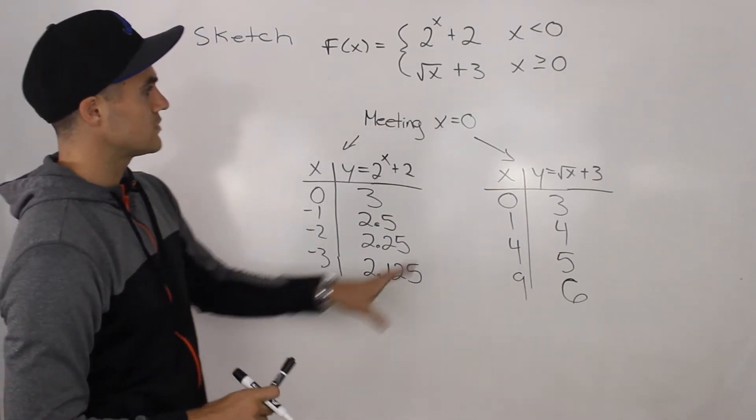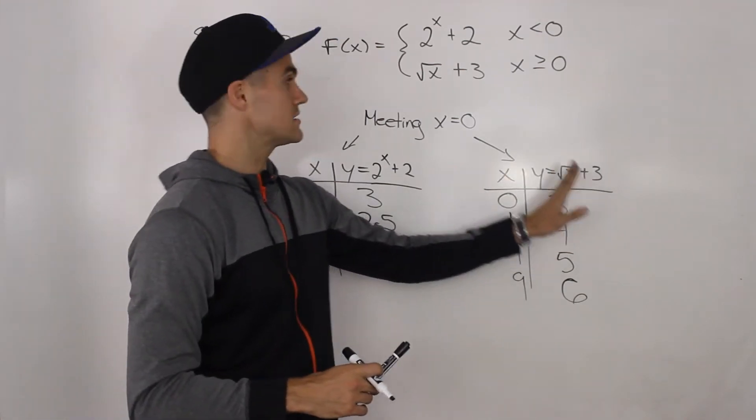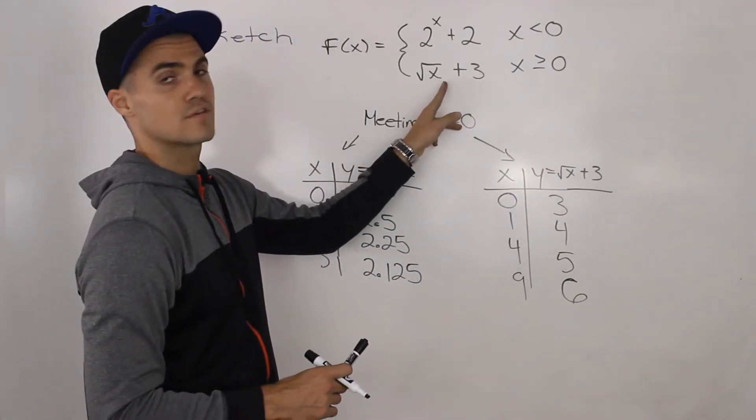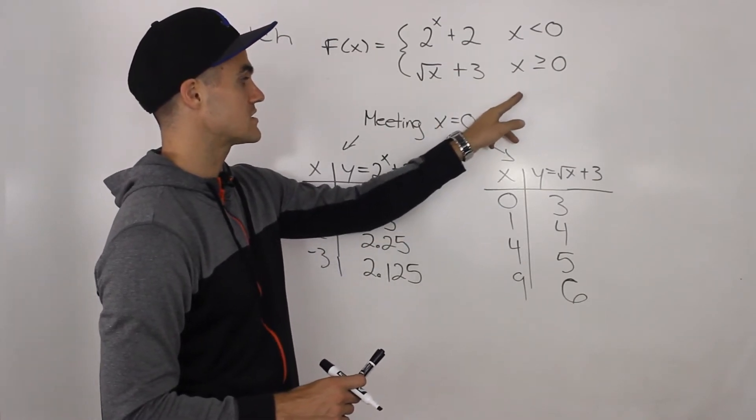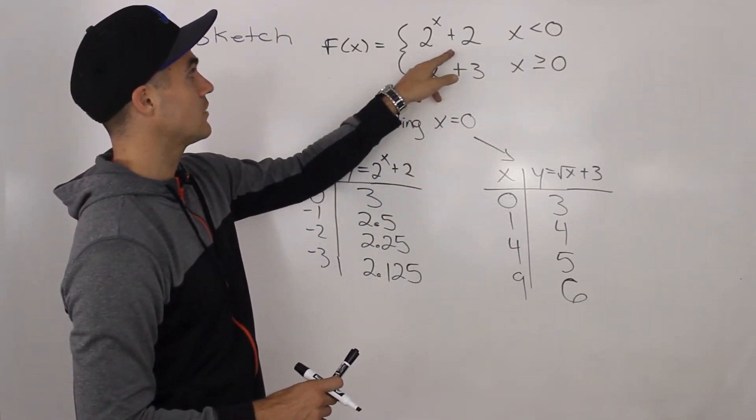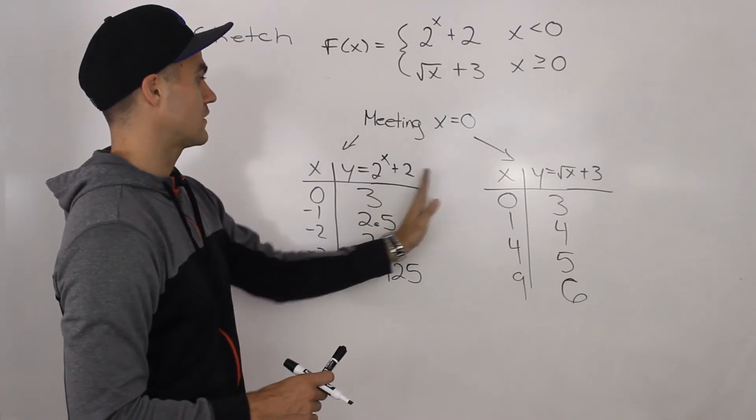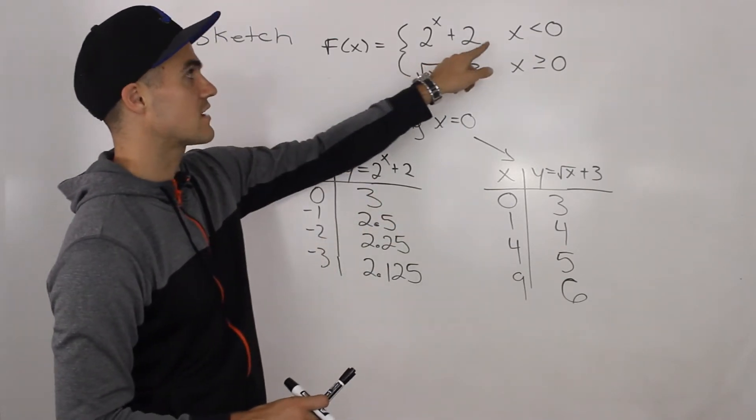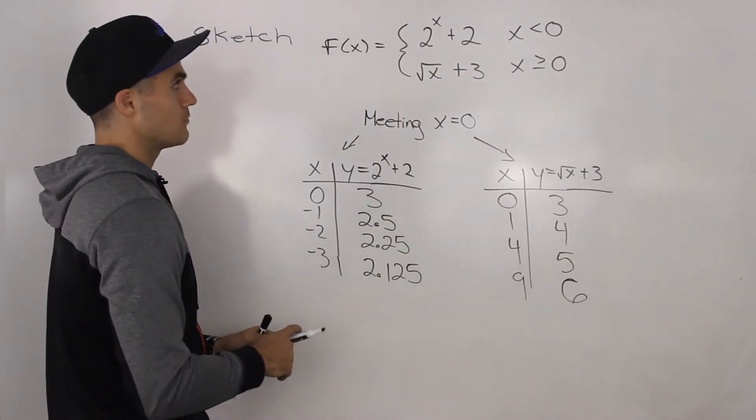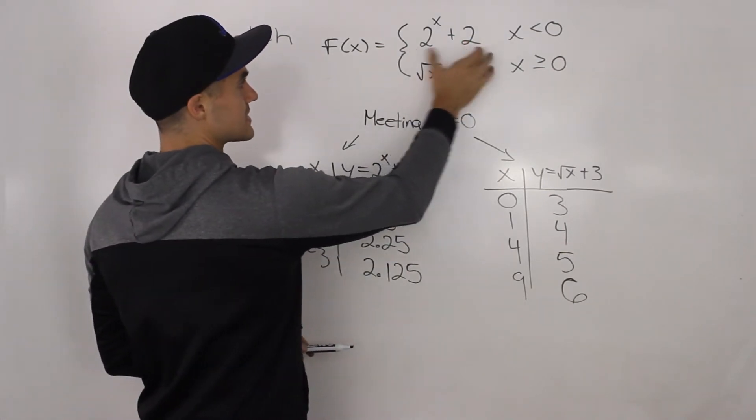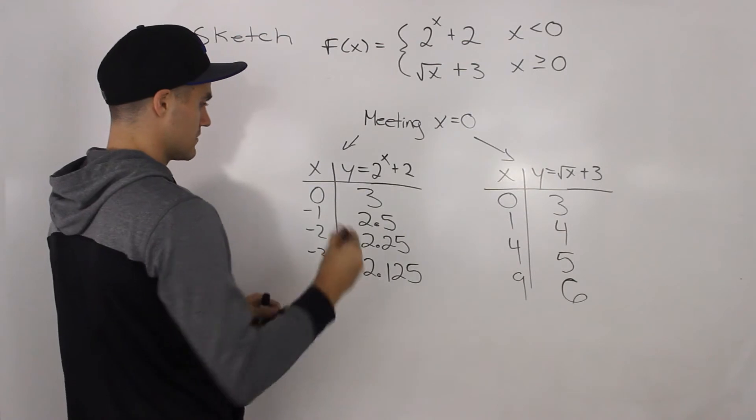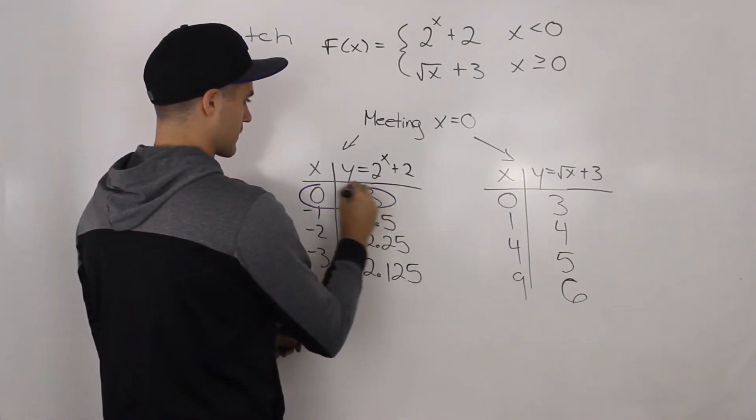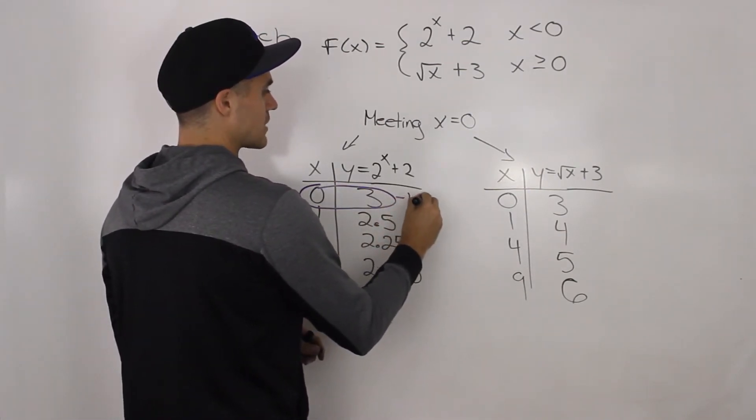We have the table of values for the right piece of the function, all the x values that are greater than or equal to zero. And then we have the table of values for the left piece for all the x values that are less than zero. Now, because this piece is not defined at x is equal to zero, we know that this coordinate here is going to be a hole.